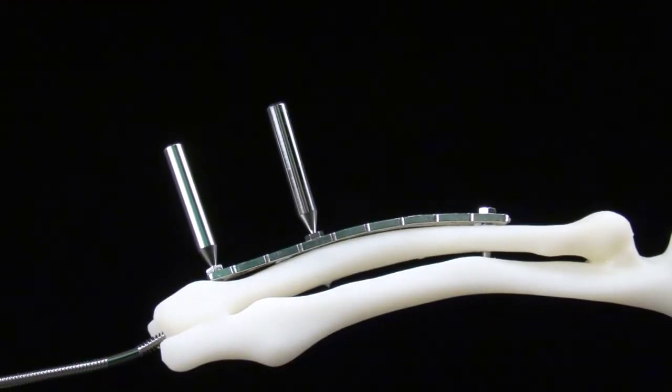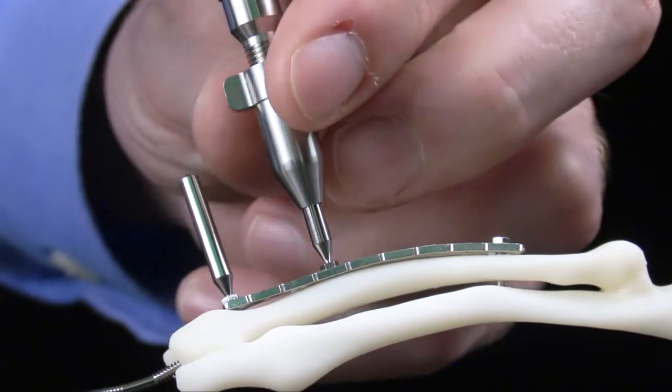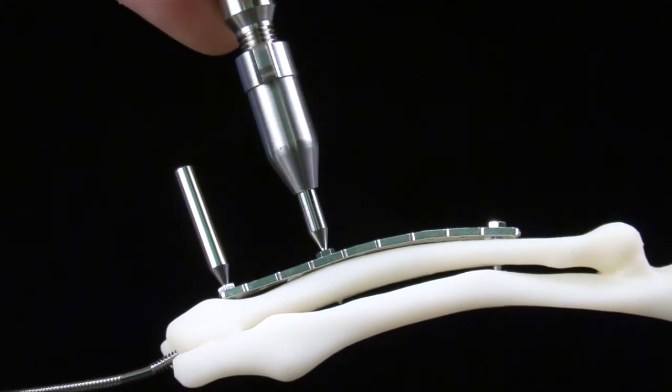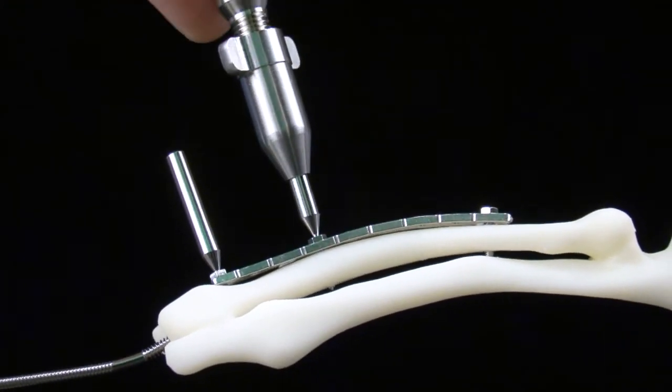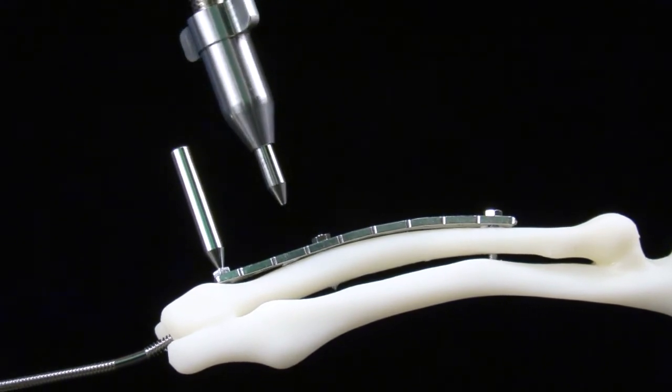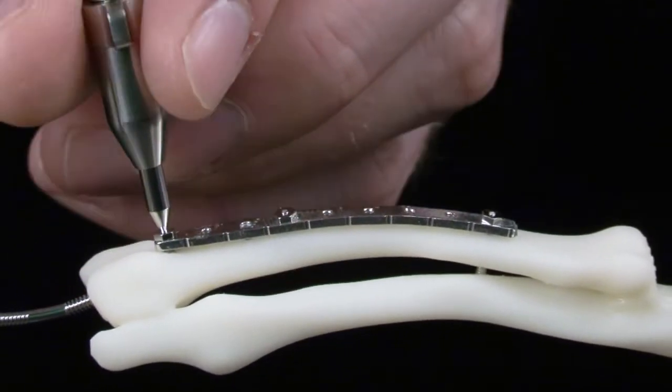Alternatively, with the 1.0 and 1.4 mm screws, the screw can continue to be tightened using the finger driver until the shaft twists off of the screw head. A combination of turn and rock is also effective for shaft removal.